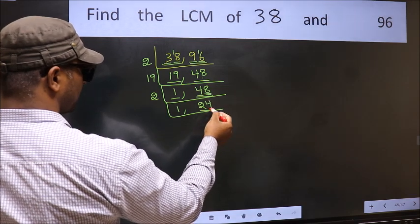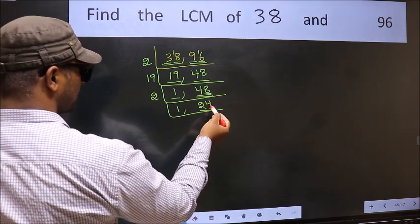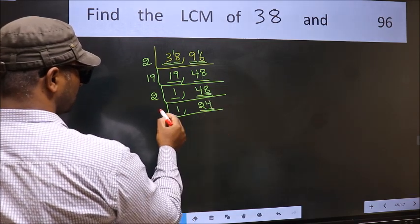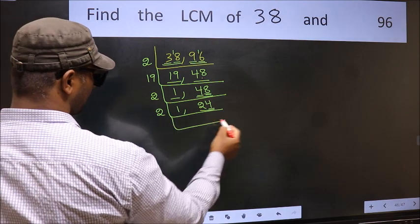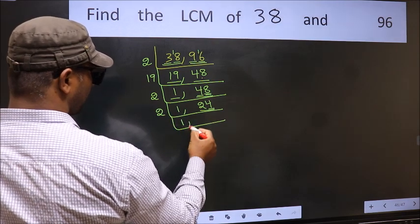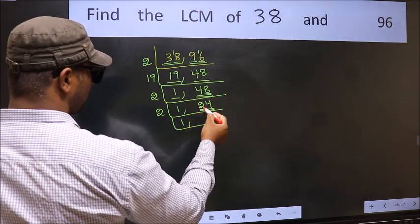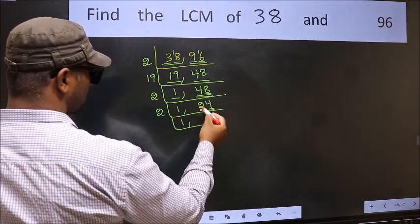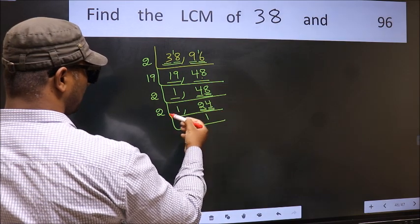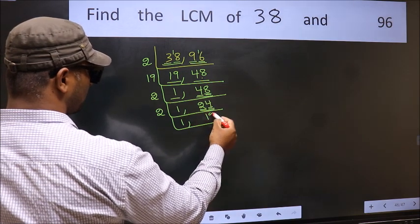Now here we have 24. The last digit is 4, which is even, so take 2. The first digit is 2; when do we get 2 in the 2 table? 2 ones = 2. The other part is 4; when do we get 4? 2 twos = 4. So 24 ÷ 2 = 12.